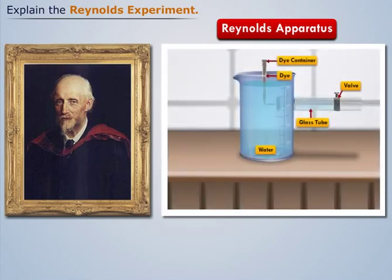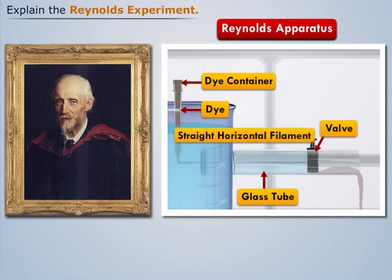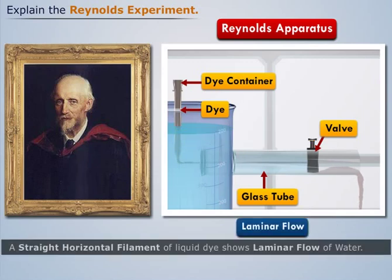We allow the water to flow from the large tank into the glass tube and introduce a liquid dye into the glass tube along with the water. When we open the regulating valve for a short duration, the water flows out of the glass tube smoothly and the liquid dye flows in the water in the form of a straight horizontal filament, characterizing laminar flow.